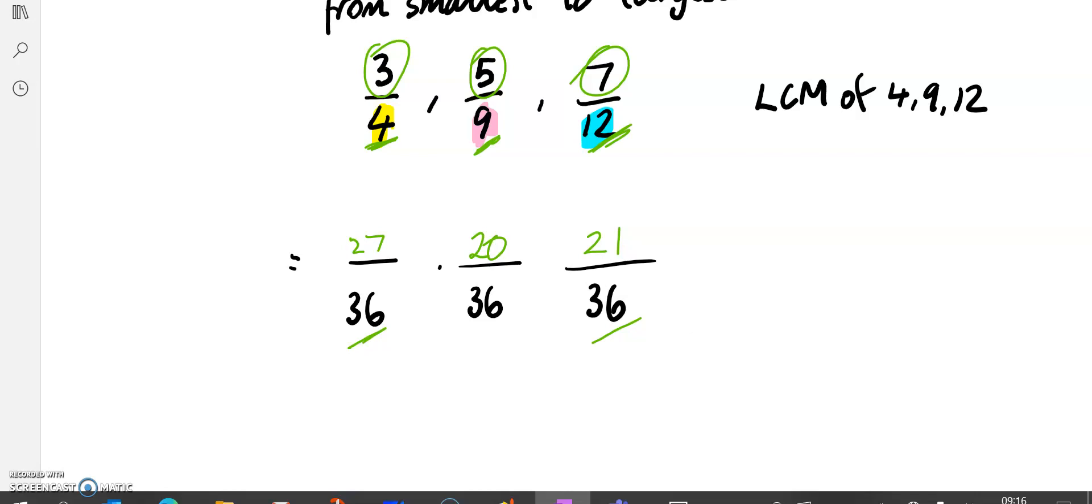So now that we've got them with the same name, it's very straightforward to see which is the biggest, which is the smallest. Hopefully you can see that this is the smallest. 20 thirty-sixths is smaller than the others. So 20 thirty-sixths was the smallest, so that was 5 ninths. Then it was 21 thirty-sixths, which was 7 twelfths. And then finally, 3 quarters. So in order to put fractions in order, we want to make sure they have the same name. In order to find that name, we find the lowest common multiple.